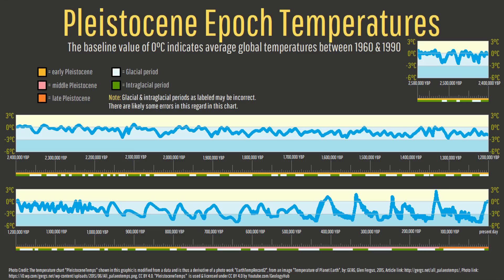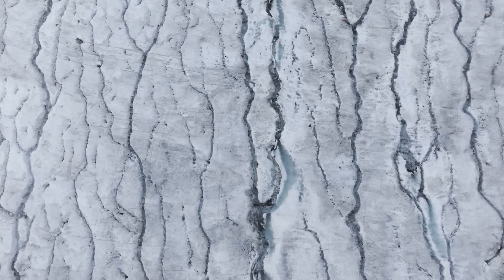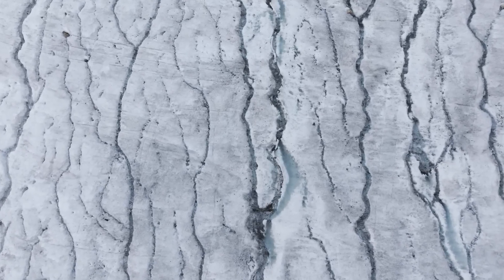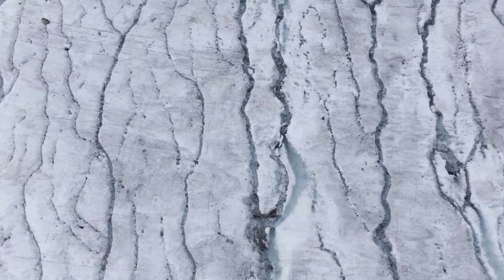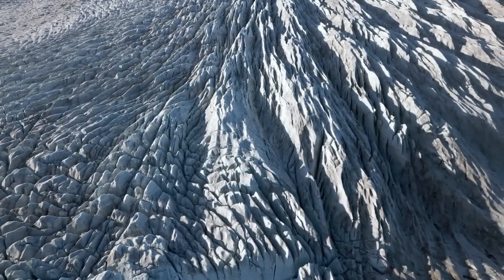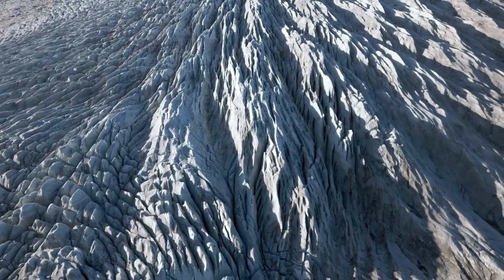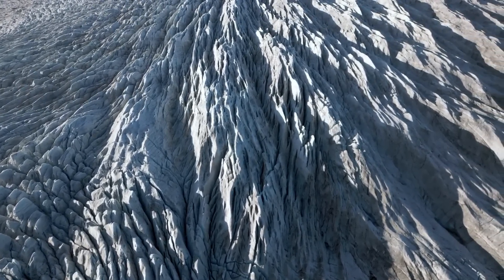As glacial and interglacial periods pulsed every approximately 100,000 years, the planet continued to get colder, allowing glaciers in each subsequent cycle to potentially reach further and further from the poles. It took until 2 million years ago before the first glaciers reached what would eventually become the Finger Lakes, at which time they began flowing uphill. However, since gravity affected their motion, large masses of ice flowed towards the lowest points in the regional landscape, causing ice to begin carving away rock at 11 regional V-shaped valleys.